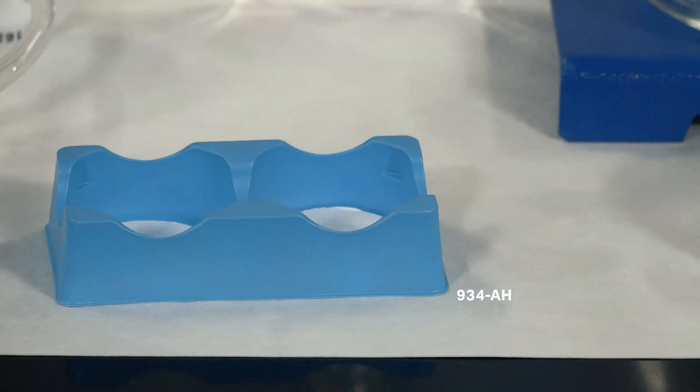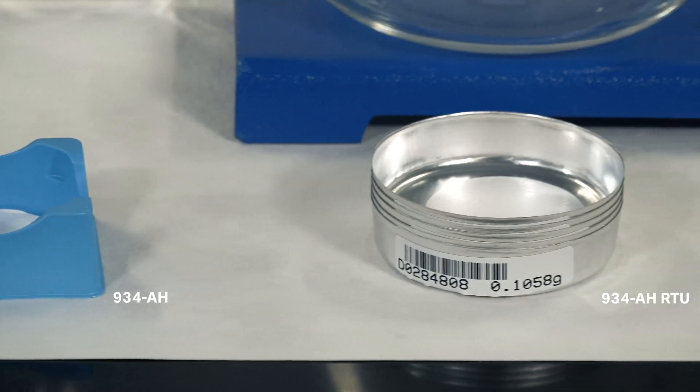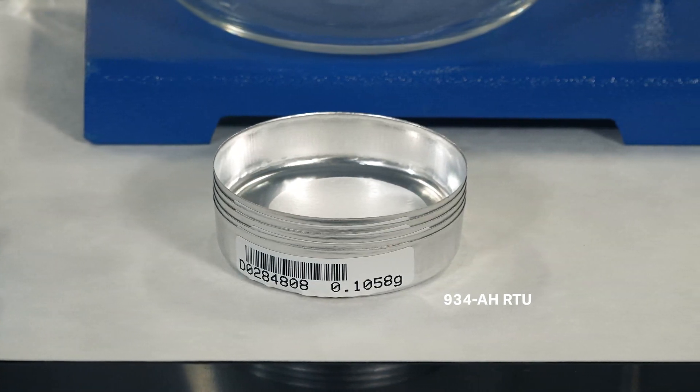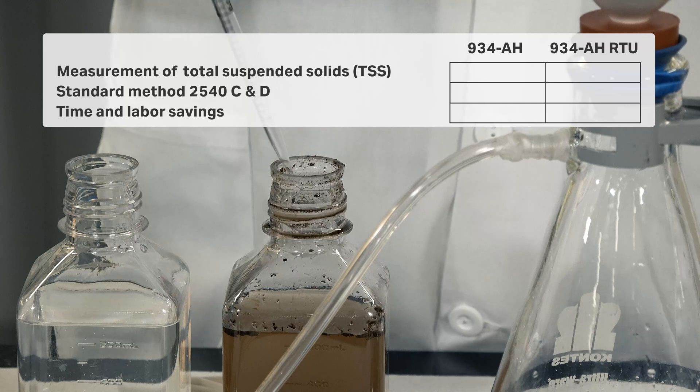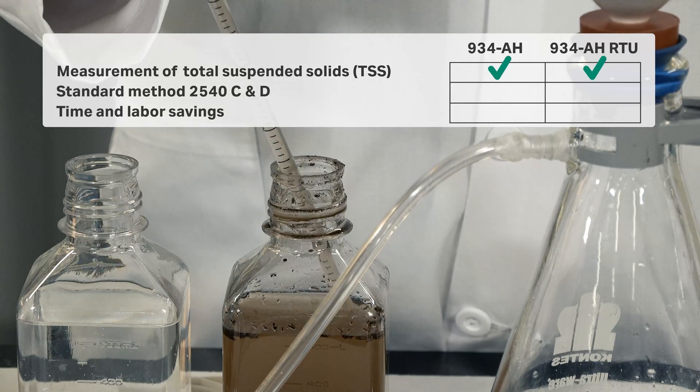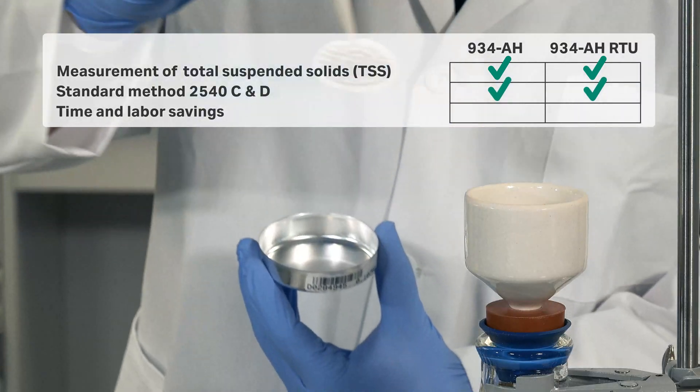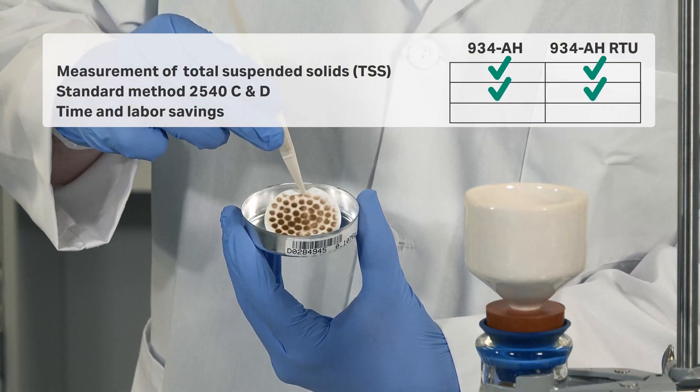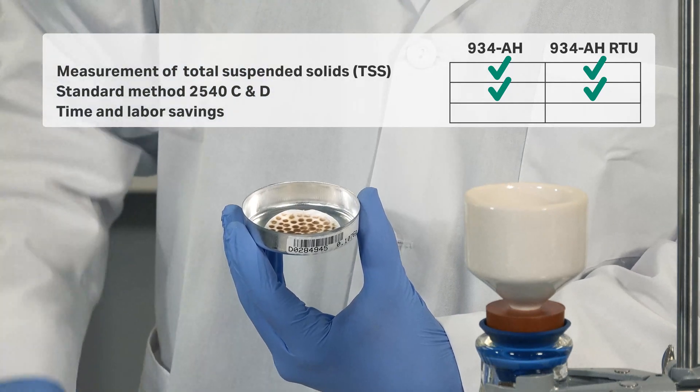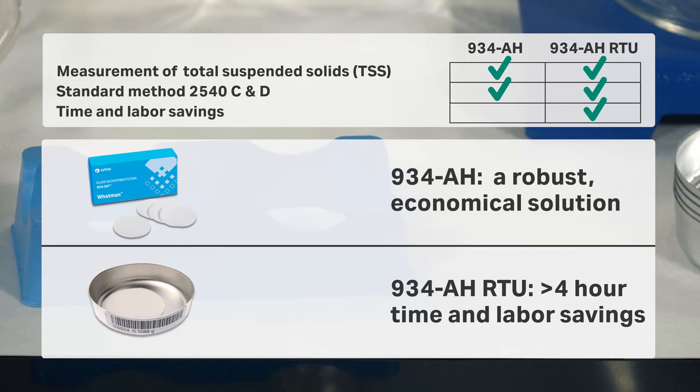Today, we will be showing the differences between 934AH and 934AHRTU. Both products will produce the same result: measurement of total suspended solids, TSS, in compliance with standard methods 2540C and D. However, the 934AHRTU will be a good alternative to save time and labor.